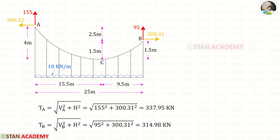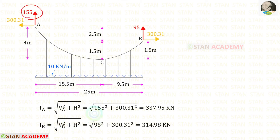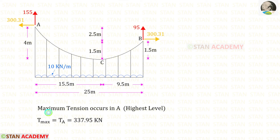Now let us find the tension in the supports. At support A, the formula is: Ta = √(Va² + H²). At support B, the formula is: Tb = √(Vb² + H²). Applying the values of Va, Vb, and horizontal thrust H, after calculation we get Ta and Tb. The maximum tension occurs at A because it is at the highest level; the tension at A is 337.95 kN.